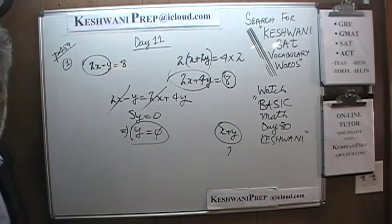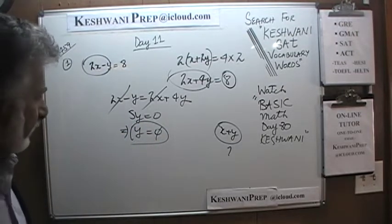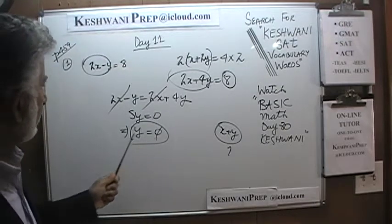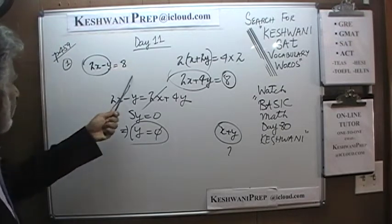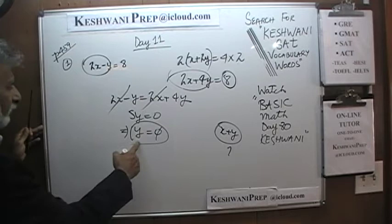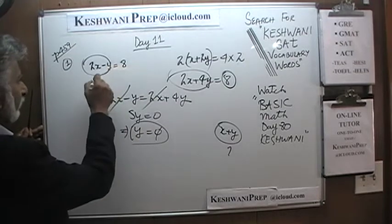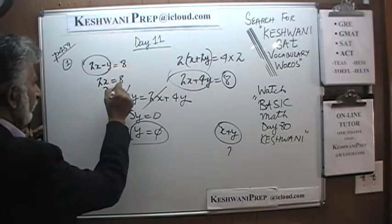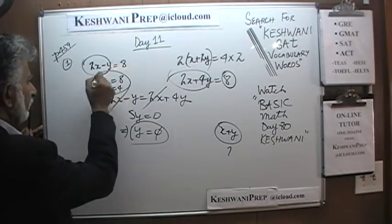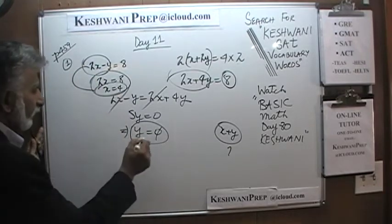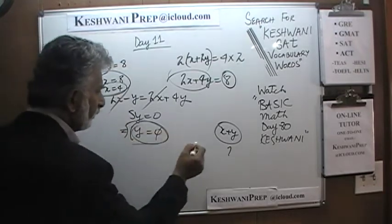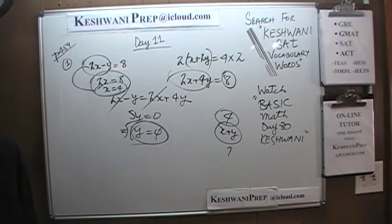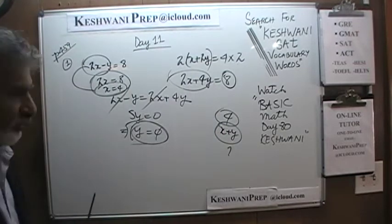If 5 times some quantity is 0, then obviously the quantity is 0. Now that we have the value of y, we can figure out x from either equation. Using the first equation with y equal to 0: 2x equals 8, so x equals 4. Therefore x plus y equals 4. Very simple, very straightforward.